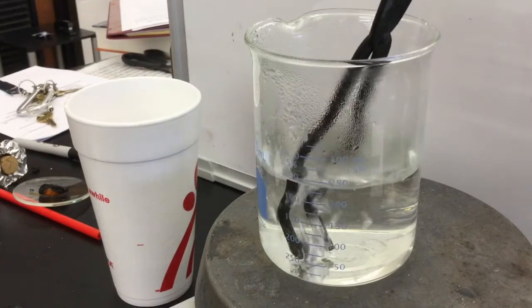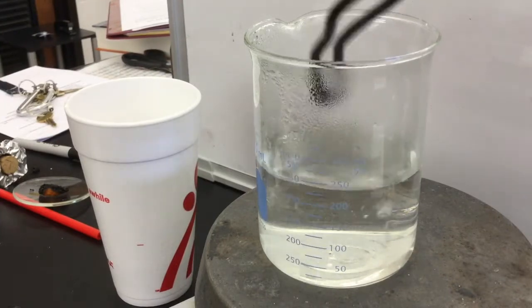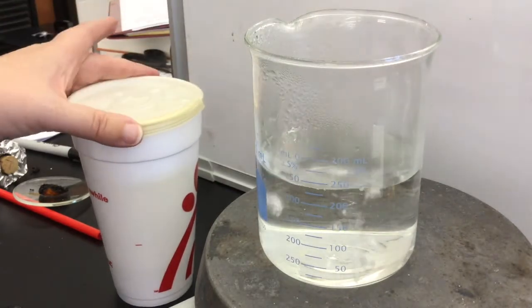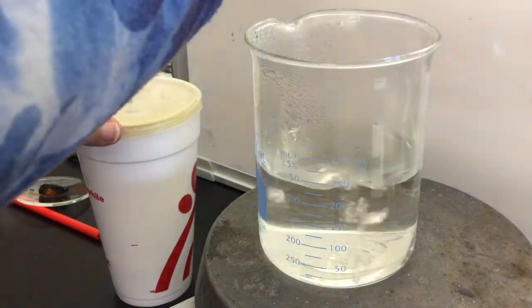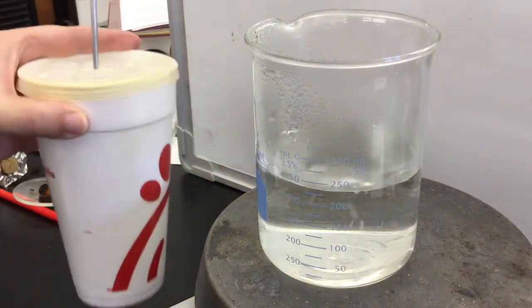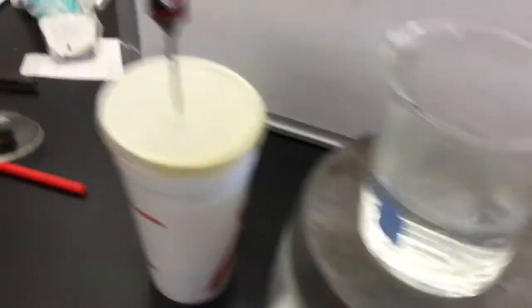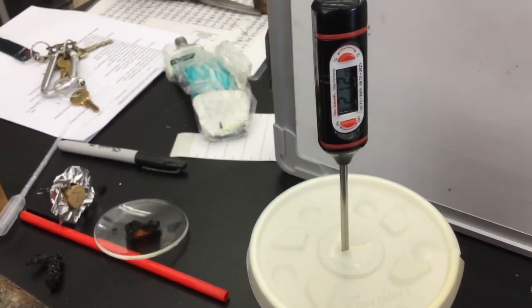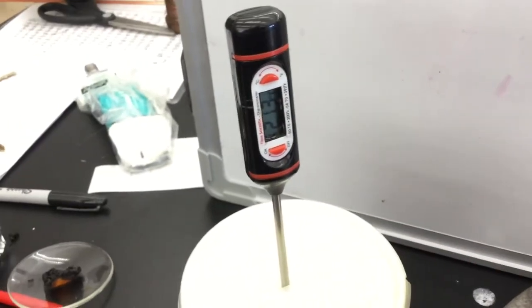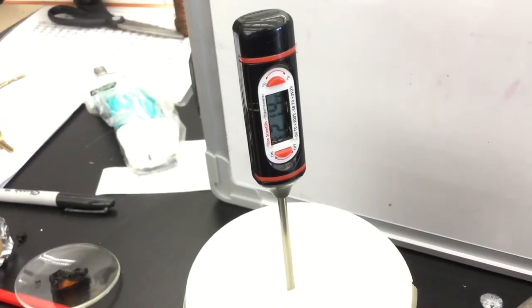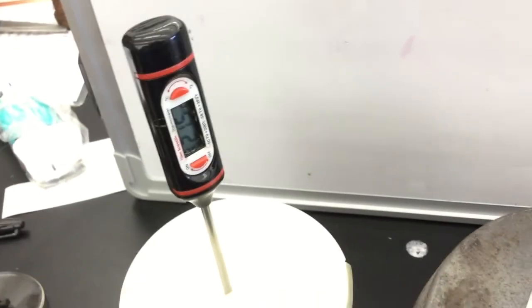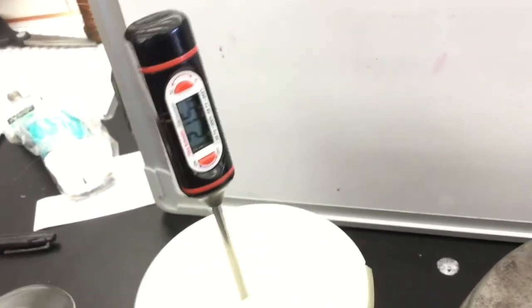Transfer the metal piece to the styrofoam cup and quickly replace the lid and add the thermometer. The temperature change will take up to 30 seconds but you should see the final temperature within a minute of adding your thermometer. Record only the highest temperature as your final temperature. The final temperature of the water is the same as the final temperature of the metal.